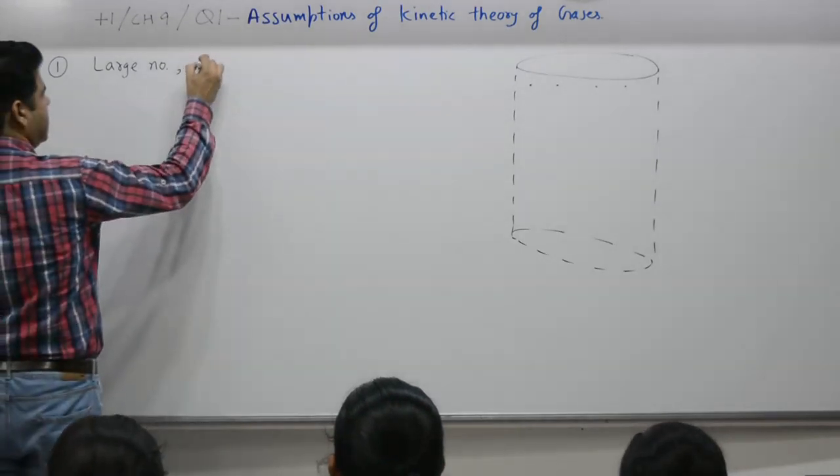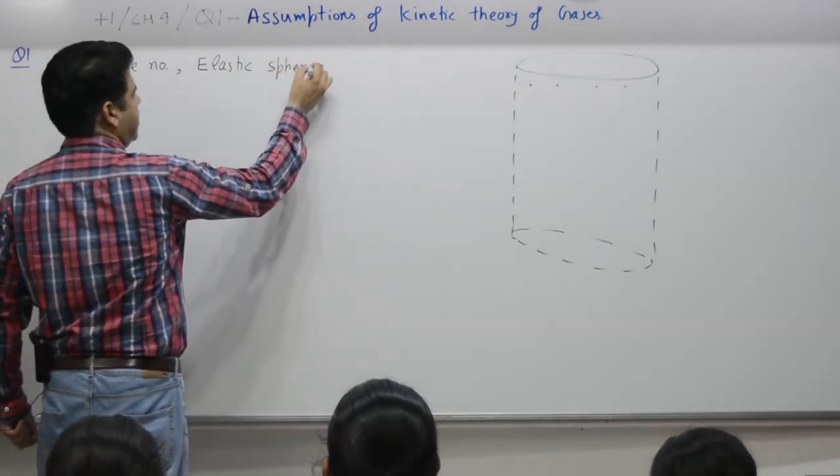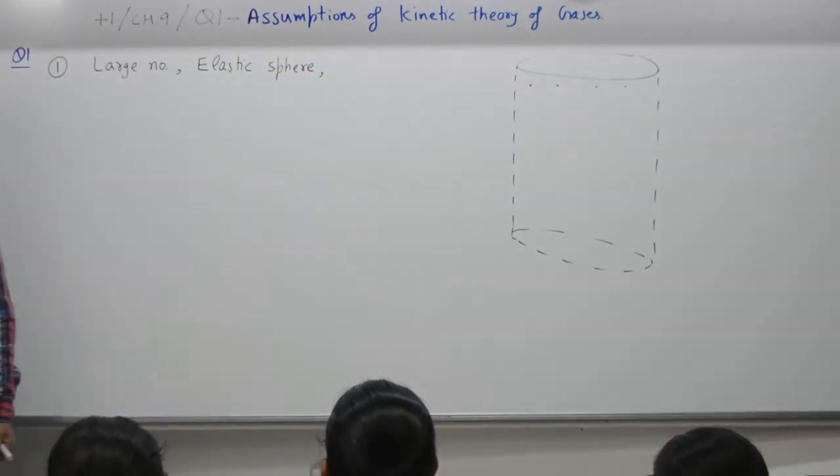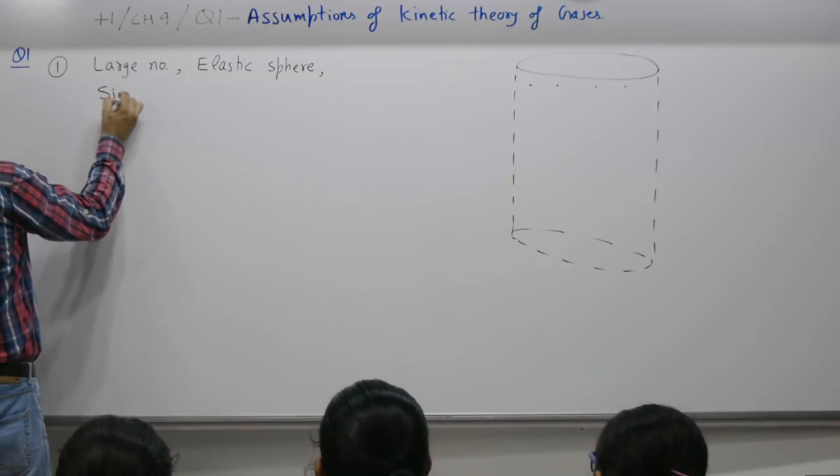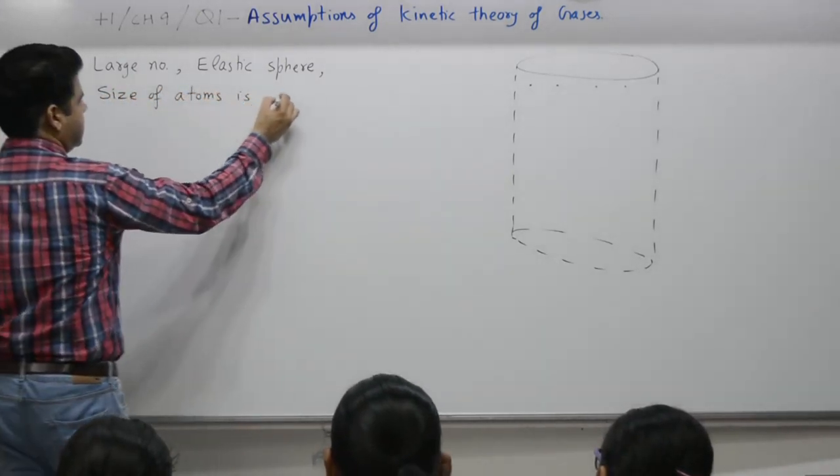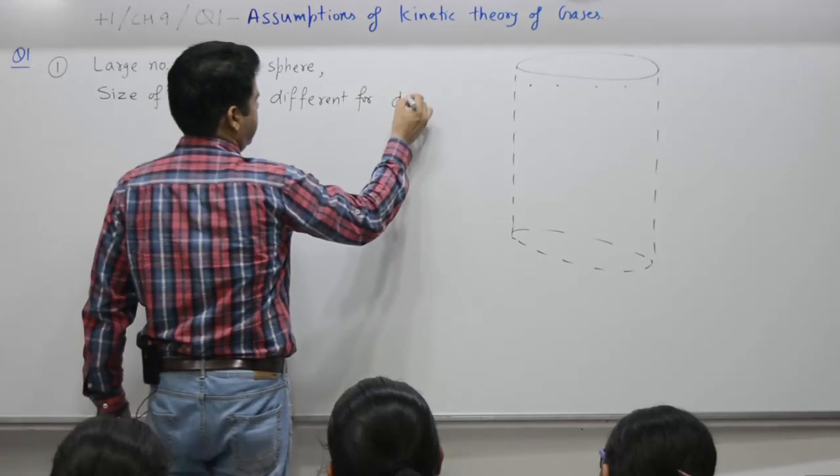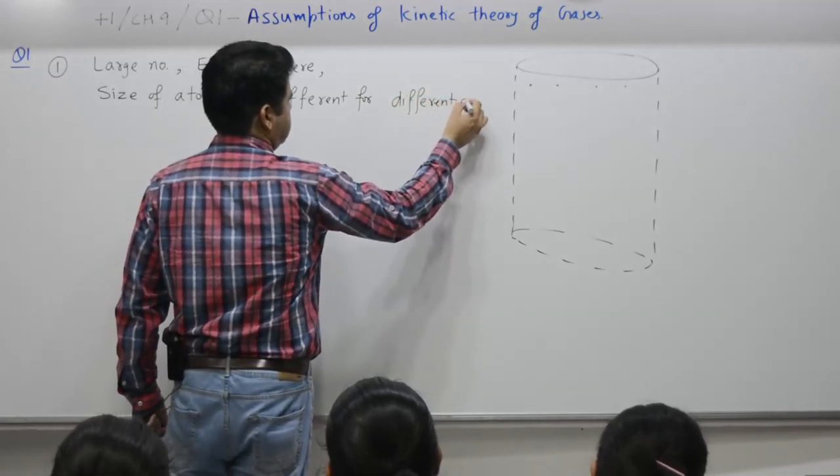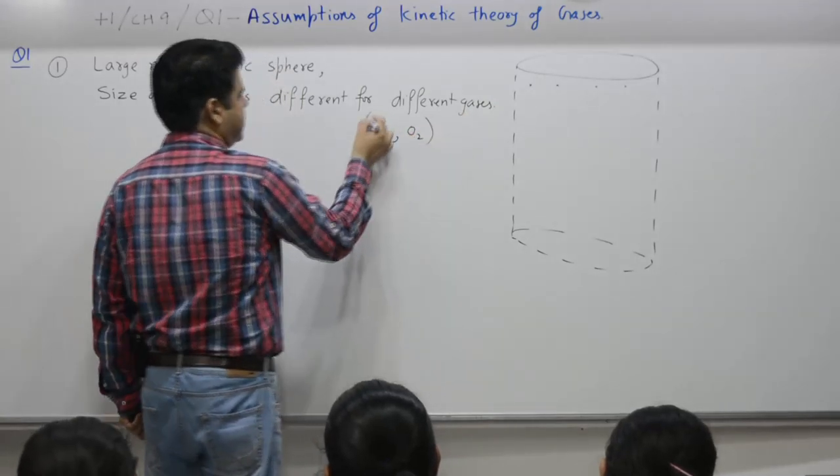One mole, 22.4 liters of a gas, 6.023 times 10 to the power 23, large number. Elastic means you can apply law of elastic collision, conservation of momentum, force, Newton's law. Different for different gases, size of atoms is different for different gases. Means what? For hydrogen it is different, for oxygen it is different.